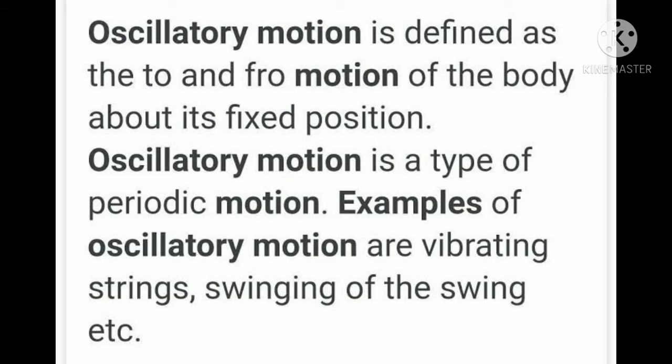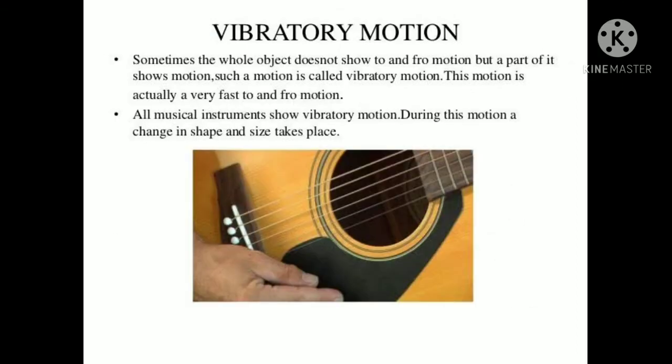Oscillatory motion is defined as the to-and-fro motion of a body about a fixed position. It is also a type of periodic motion. Examples include vibrating strings and the swing of a swing. If the to-and-fro motion is very fast, it is called vibratory motion. In vibratory motion, the whole object does not show to-and-fro motion, but a part of it does.